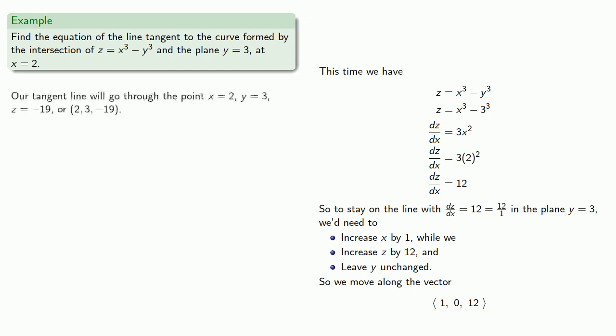So remember, our tangent line will go through the point 2, 3, negative 19, and it will go in the direction of the vector 1, 0, 12. So its equation will be